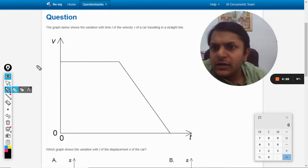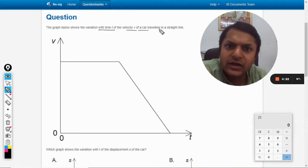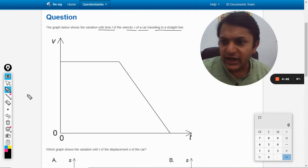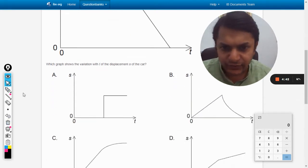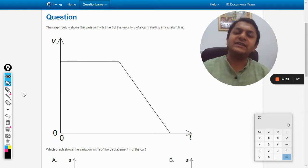Okay dear students, the graph below shows the variation with time t of the velocity v of a car traveling in a straight line. The graph is shown and we need to comment about the further graphs. As it is evident from the question, we would be going downwards to the options. First of all, let us understand the question properly.